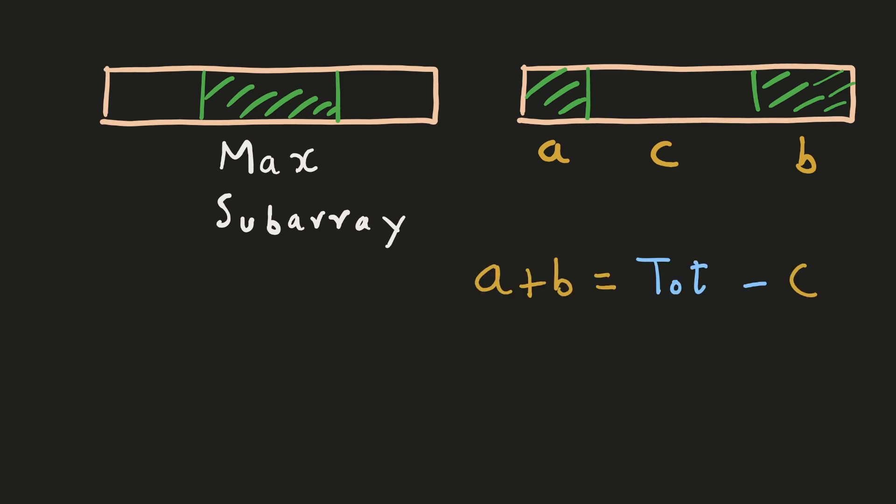We can also write this equation as: to maximize our answer, we have to maximize the left part of this equation. Since the total of this array is a fixed part and it cannot be changed, we have to subtract as little a number as possible to maximize our left part. This is only possible if we minimize this variable of this equation.